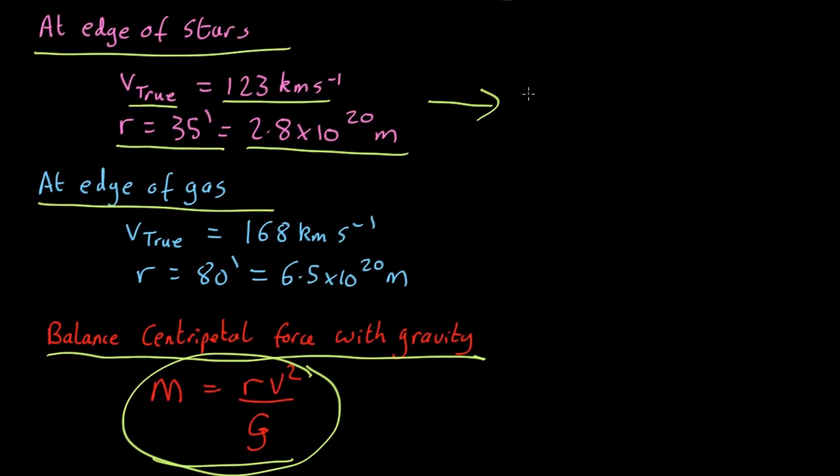And we find here that the mass of the central 35 arc minutes, so that's of the region containing stars, comes out as about 3.2 by 10 to the 10 solar masses.